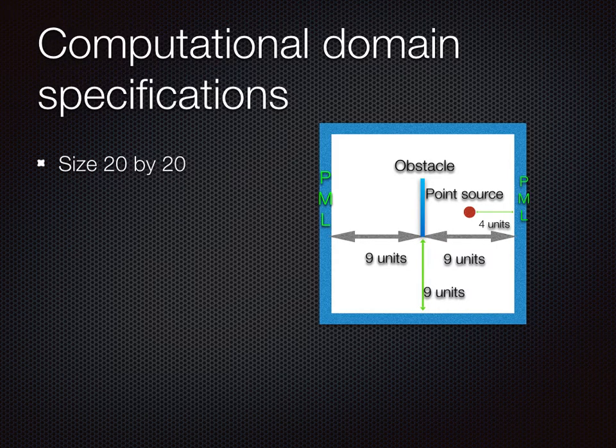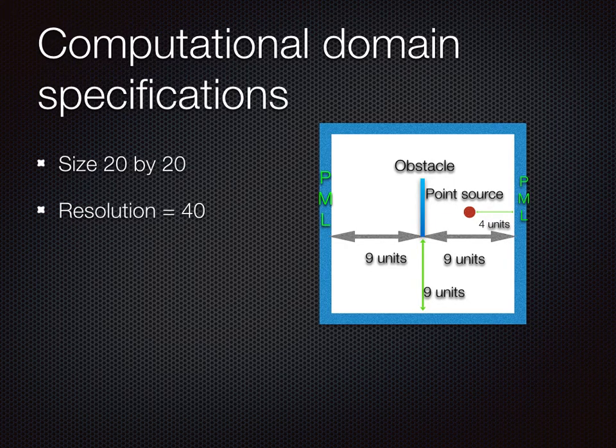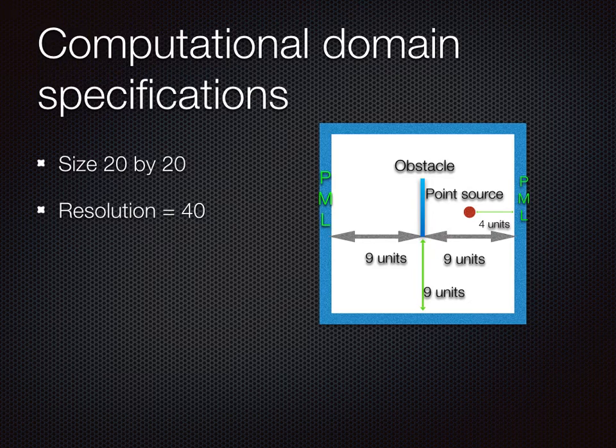The size of our numerical domain is 20 wavelengths by 20 wavelengths. This works as Maxwell's equations are scale invariant. The resolution that we choose is 40, which just means that our domain gets spatially discretized into 40 steps along each dimension. Equivalently, the grid size in FDTD would be 0.5 by 0.5 wavelength.